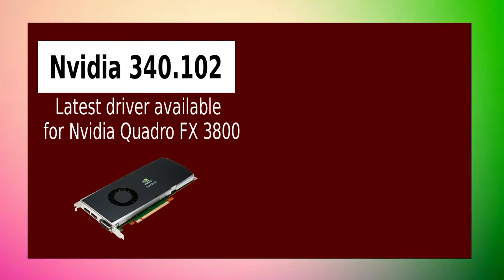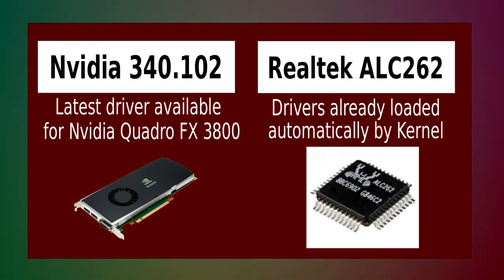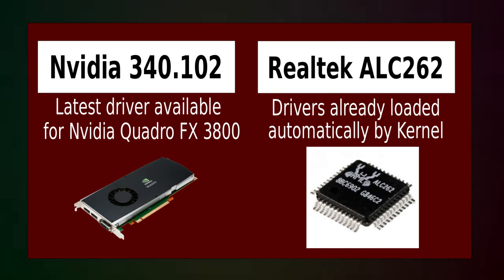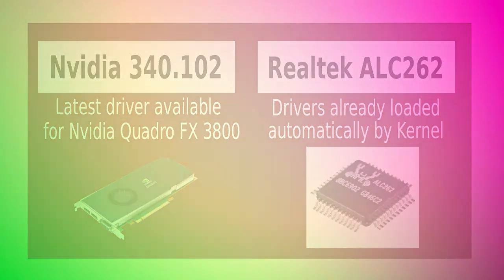There are some tweaks I made to the system after installation to make it more responsive for desktop workstation use, and I will list them in another video. Audio on FreeBSD 11.1 needed no intervention — it worked out of the box and detected my Realtek ALC262 based on-board sound with no problem at all on the XW6400.